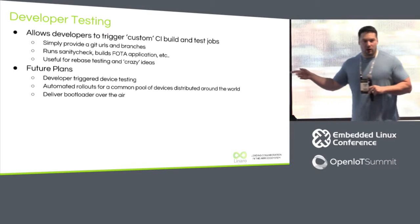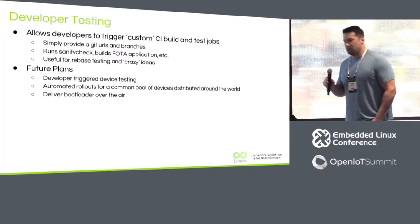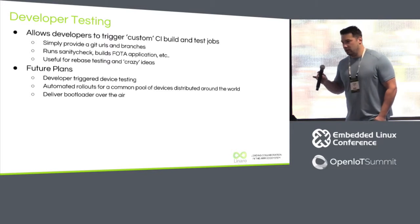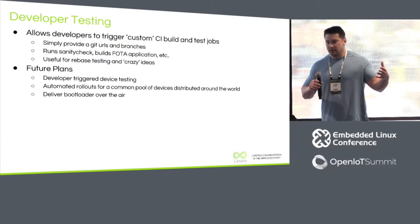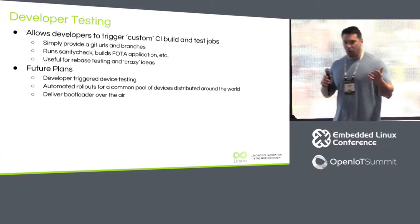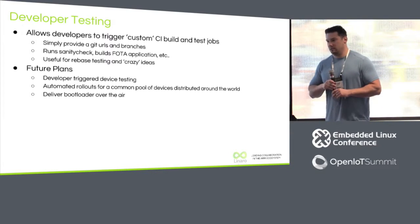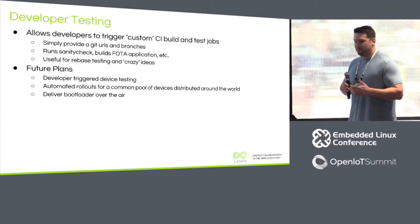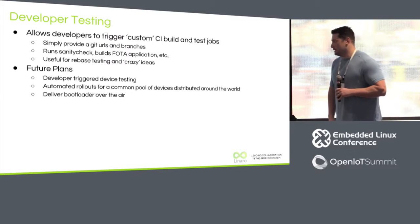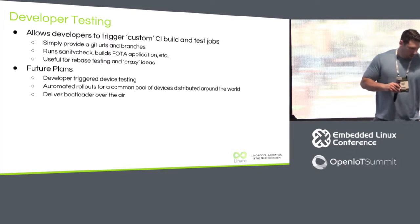Future plans: we want developers to be able to trigger hardware tests from the command line without dealing with the CI system. We want automated rollouts for a common pool of devices distributed around the world — all developers working on this project having a gateway and devices at their desk, with a subset automatically updated as new builds come out of CI. The goal is a centralized Hawkbit server pushing updates continuously to devices to show that you can continually deliver stable software with minimal downtime. One thing we're not solving yet: we're not delivering the bootloader over the air — if we change something dependent on the bootloader, we have to manually reflash all devices.